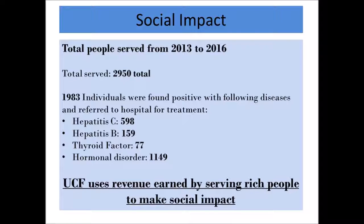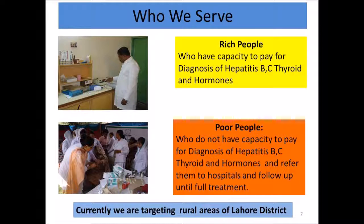Our social impact from 2013 to 2016: we served a total of 2,950 individuals, among whom 1,983 were found positive with diseases — hepatitis C: 598, hepatitis B: 159, thyroid factor: 77, and hormonal disorders. UCF uses revenue earned by serving paying customers to make social impact, serving both rich people who can pay for diagnosis and poor people who cannot, referring the latter to hospitals with full follow-up until treatment.